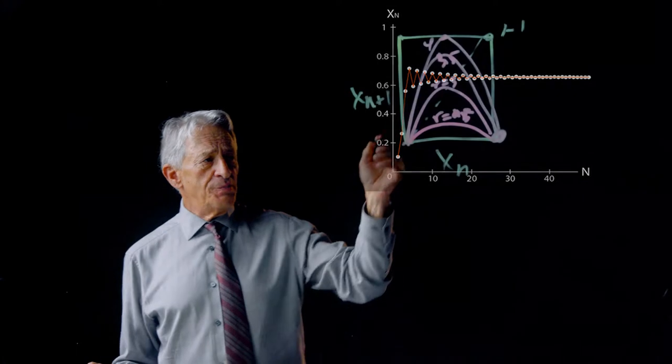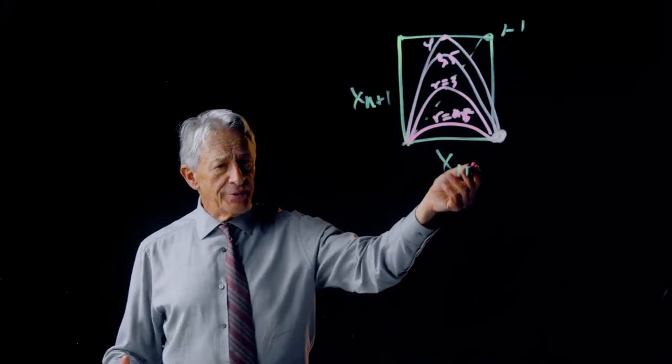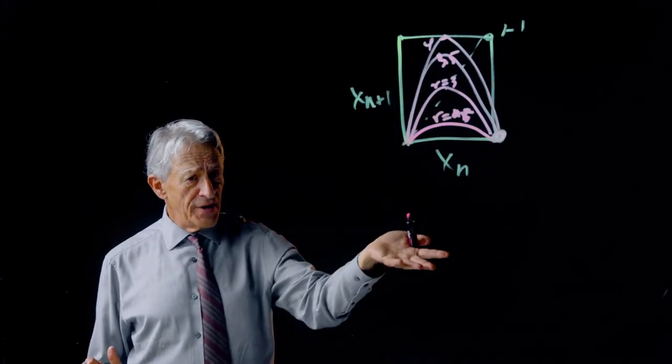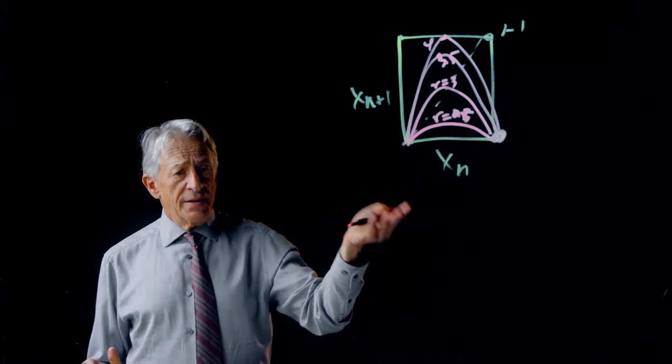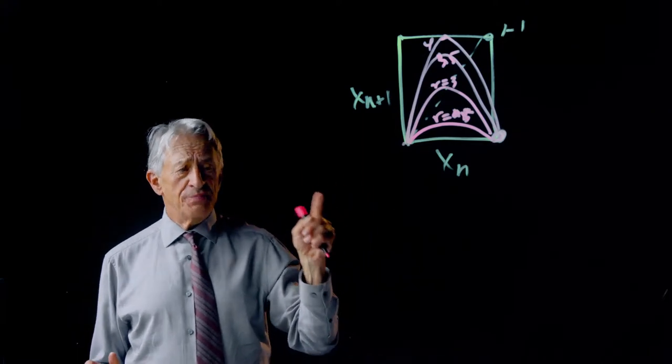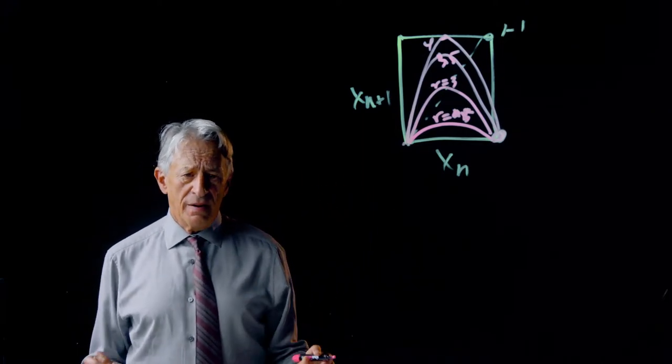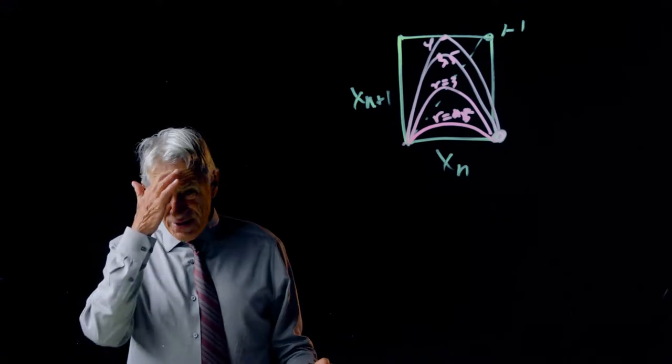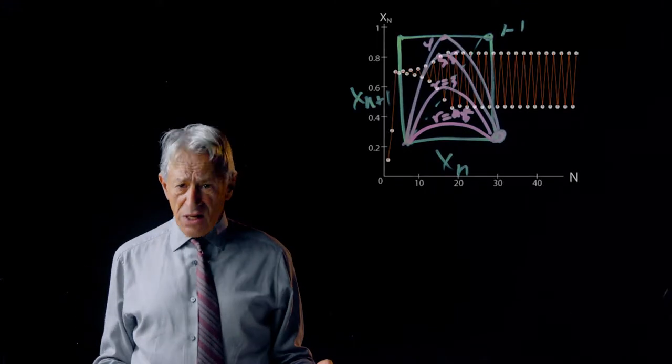Now, suppose r is a little bit bigger, r is 2.5, let's say. Now we get this behavior, and what's interesting about this is, number one, it is an oscillation.